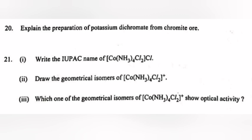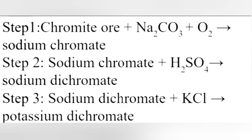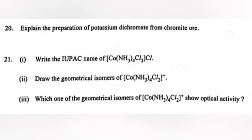Question 20: Explain the preparation of potassium dichromate from chromite ore. Step 1: Chromite ore plus Na2CO3 plus O2 gives sodium chromate. Step 2: Sodium chromate plus H2SO4 gives sodium dichromate. Step 3: Sodium dichromate plus KCl gives potassium dichromate.